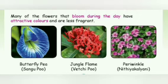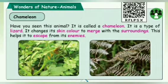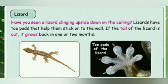Periwinkle is also called nitya kalyani. Now let's see about animals. The chameleon shown in the picture is a type of lizard. The specialty of the chameleon is that it changes its color to merge with its surroundings — this feature helps it escape from its enemies. We have seen lizards in most places, like on ceilings where they cling upside down.